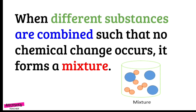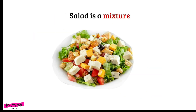When different substances are combined such that no chemical change occurs, it forms a mixture. For example, salad is a mixture. Why is salad a mixture? Because salad consists of many components which were combined together to form a mixture.